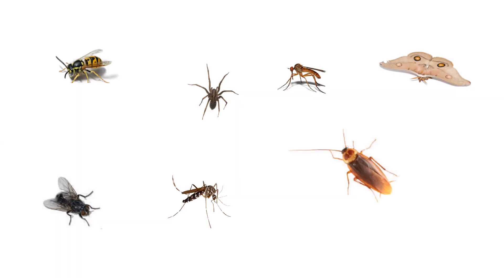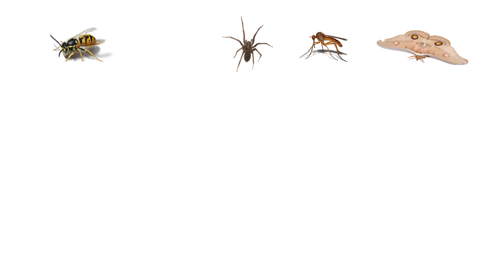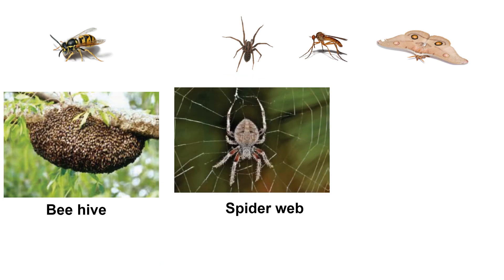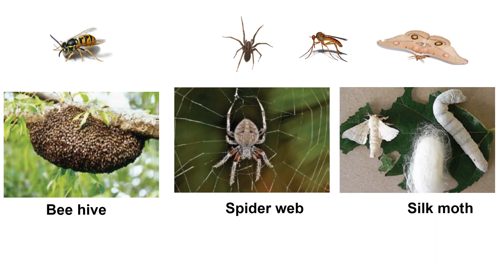There are many insects in our surroundings too. Some insects also have shelters — a honey bee lives in a beehive, a spider lives in a spiderweb, and a silkworm lives in a silk cocoon.